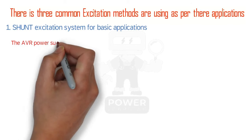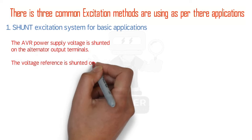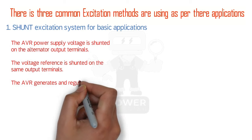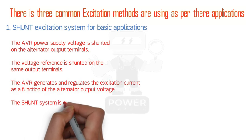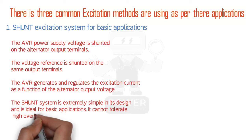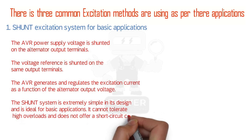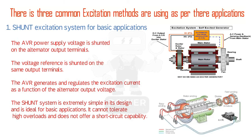In the shunt excitation system, the AVR power supply voltage is shunted on the alternator voltage output terminals. The voltage reference is shunted on the same output terminal. The AVR generates and regulates the excitation current as a function of the alternator output voltage. The shunt system is extremely simple in its design and is ideal for basic applications. However, it cannot tolerate high overloads and does not offer short circuit capability. Here you see a simple diagram of a self-excited generator.